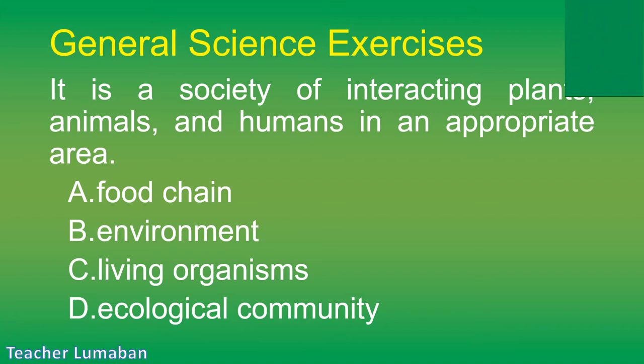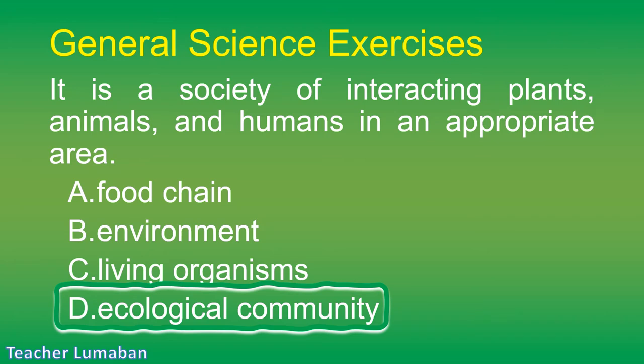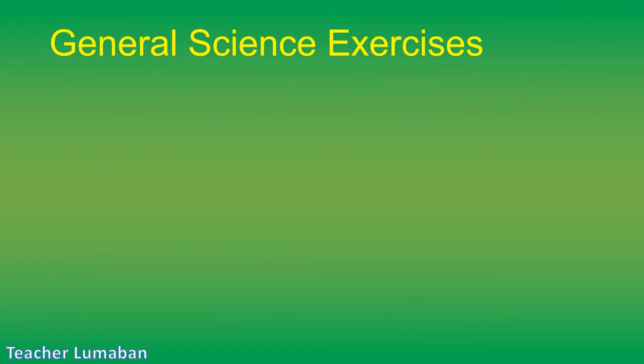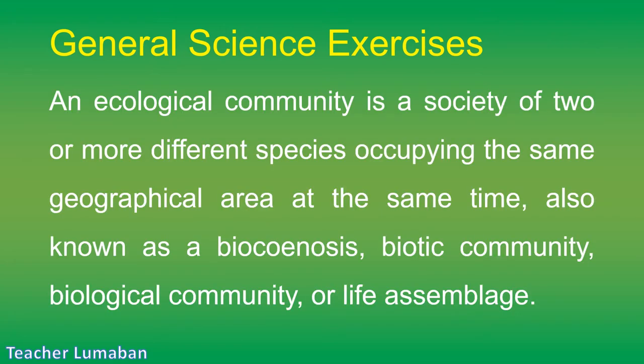The correct answer is Letter D: ecological community. An ecological community is a society of two or more different species occupying the same geographical area at the same time, also known as a biocoenosis, biotic community, biological community, or life assemblage.